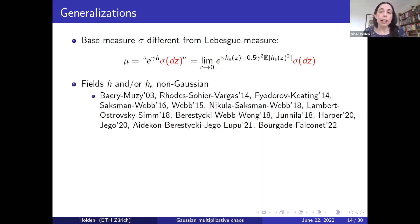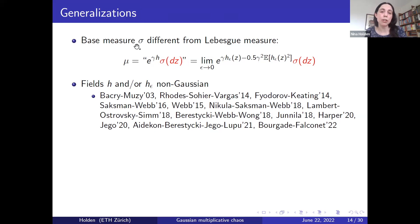Finally, some generalizations: while GMC as presented is defined as e^{gamma h} times Lebesgue measure, it is also possible to define GMC for a number of other base measures sigma, and the properties of the limiting measure will depend on the dimension of this base measure. Another interesting generalization is to consider the case when the field h is non-Gaussian. There is no general theory for this case, but people have succeeded in constructing certain GMC-type measures for a large range of non-Gaussian fields.